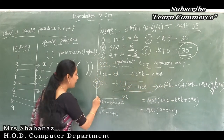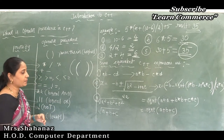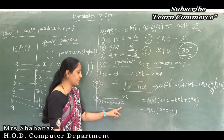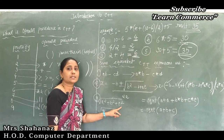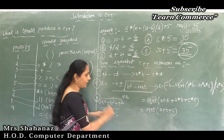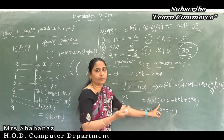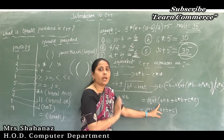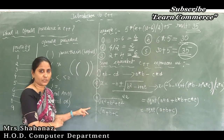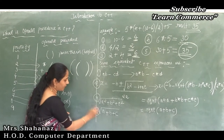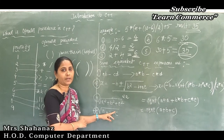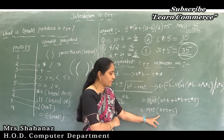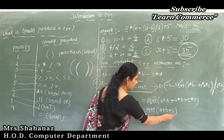The third C++ expression is √(a² + b² + c²), written as: sqrt(a*a + b*b + c*c). The fourth expression is √(a + b + c), written as: sqrt(a + b + c).